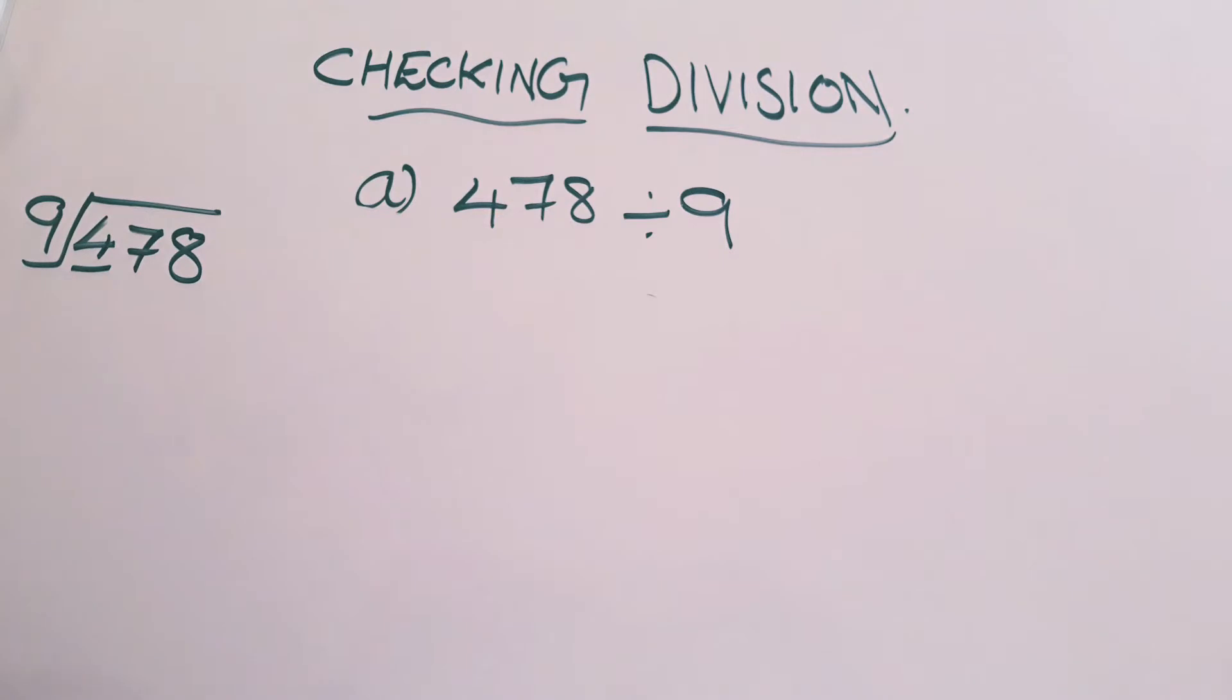Underline the first number in dividend, that is 4. In 9th table, 4 is not there and also 4 is less than 9, so you have to take the second digit also. Here 47 you have to take. In 9th table, 47 is not there. Near 47, 45 is there, so we can accept 9 fives are 45.